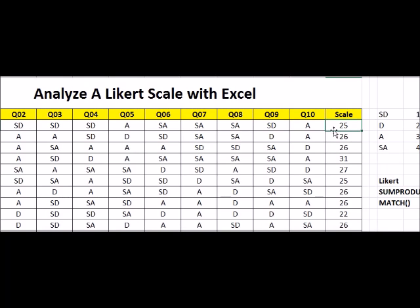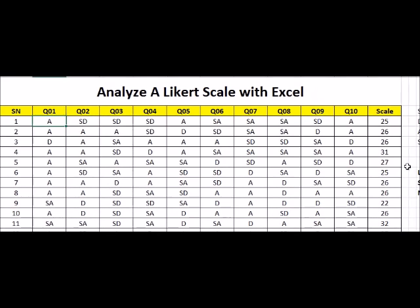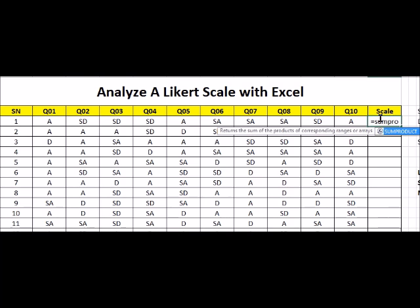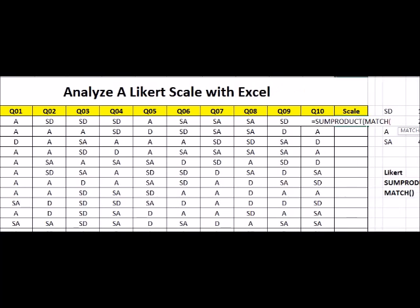So in this case, when we sum across the first row for the first respondent, we get a 25. For the second one we get 26. So how do we actually do that? I'll just delete all of this and do it again. This equals SUMPRODUCT MATCH — I'm combining the power of two powerful formulas.